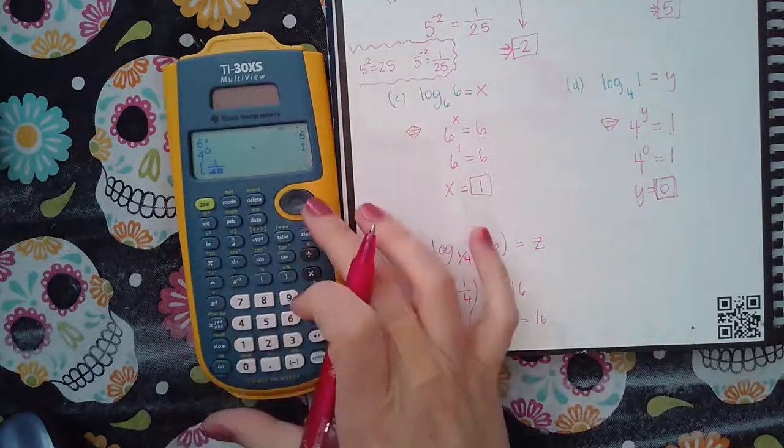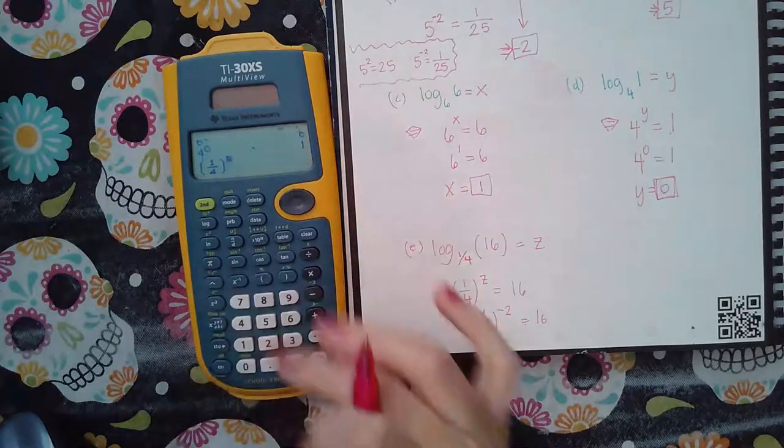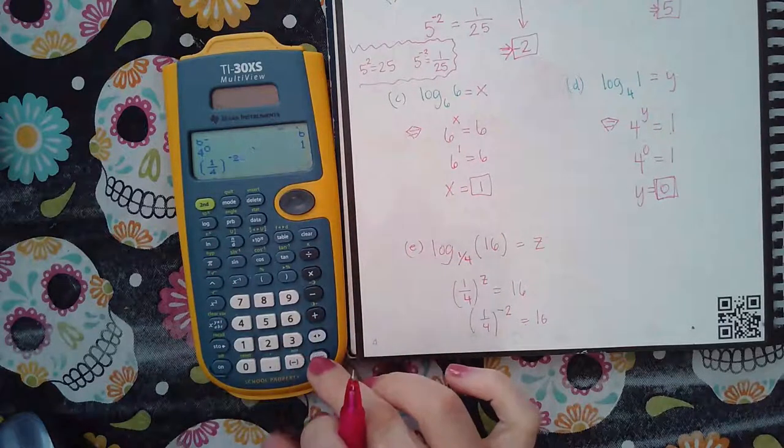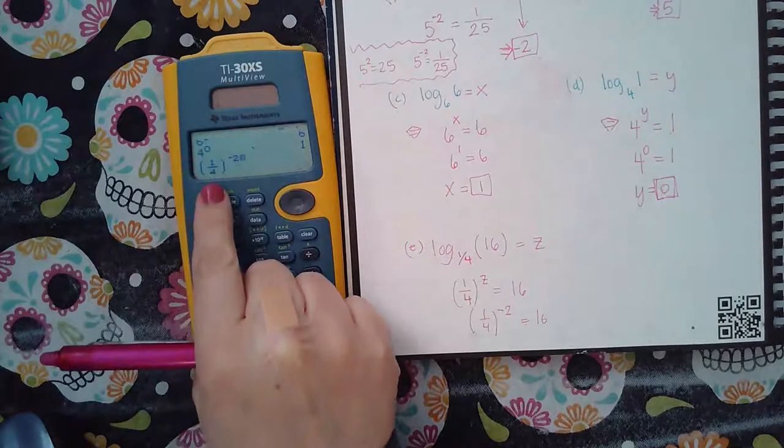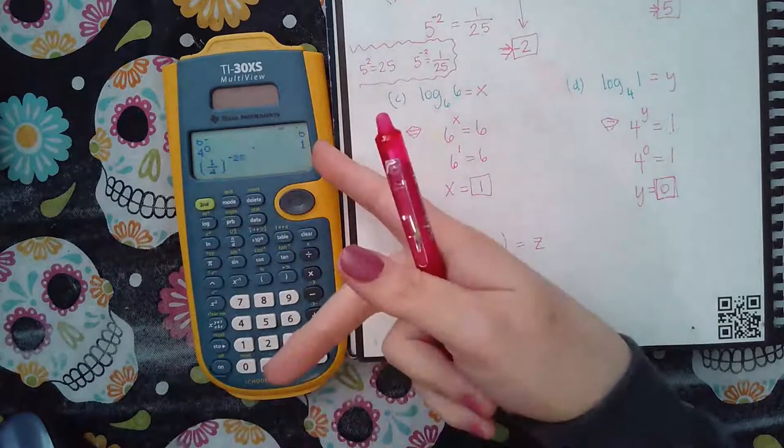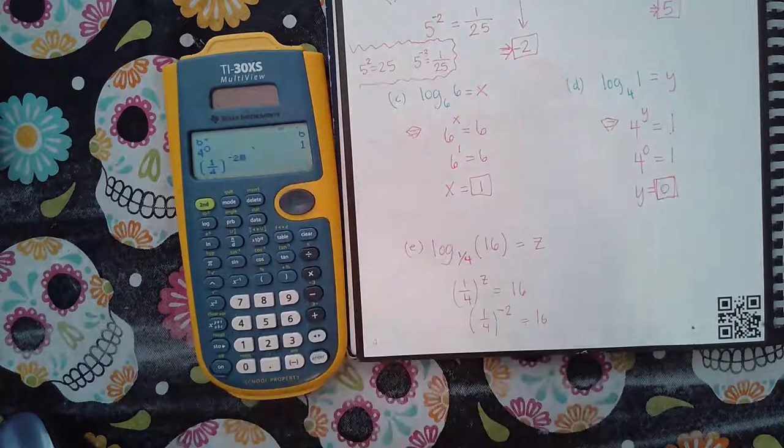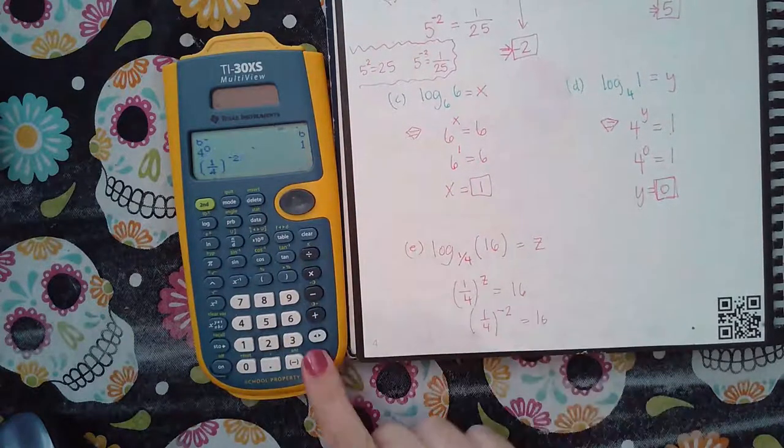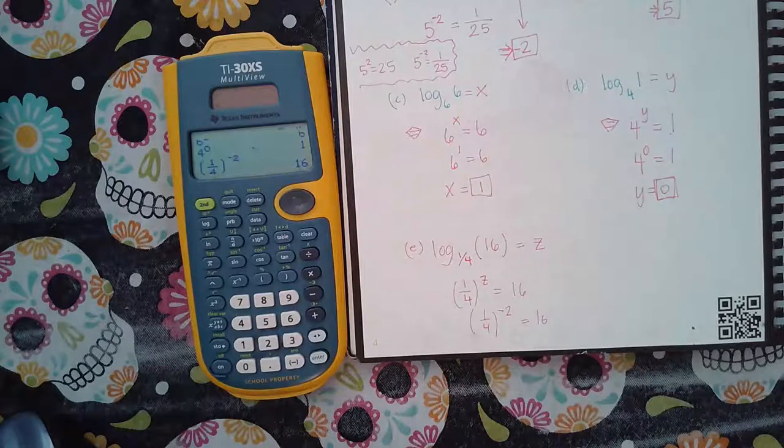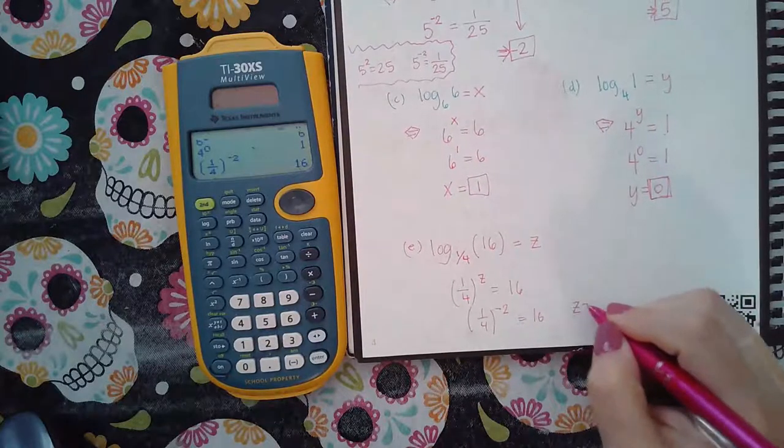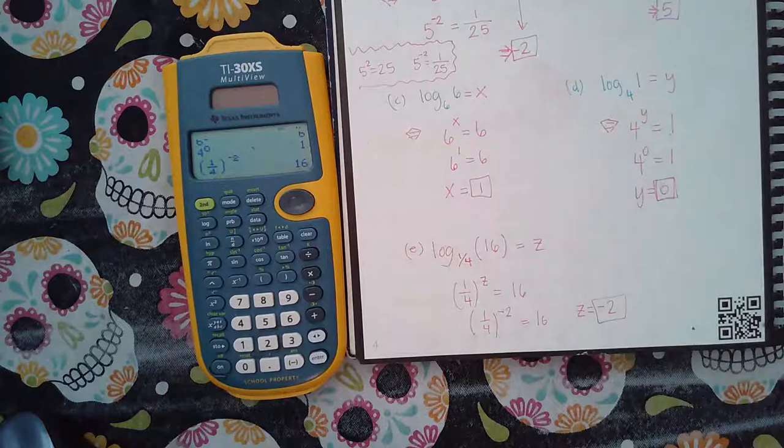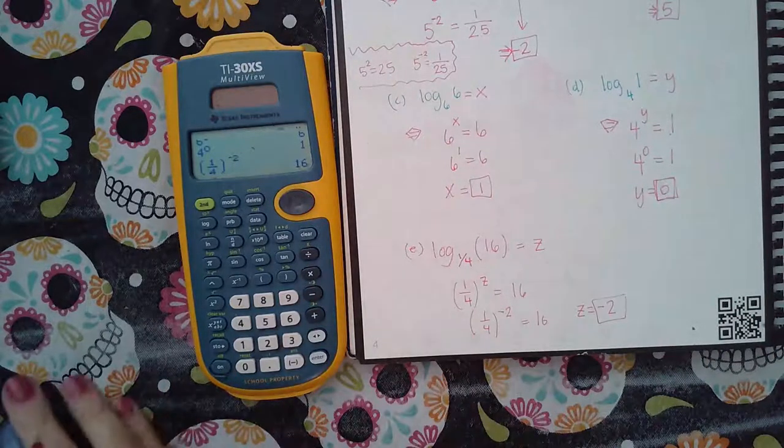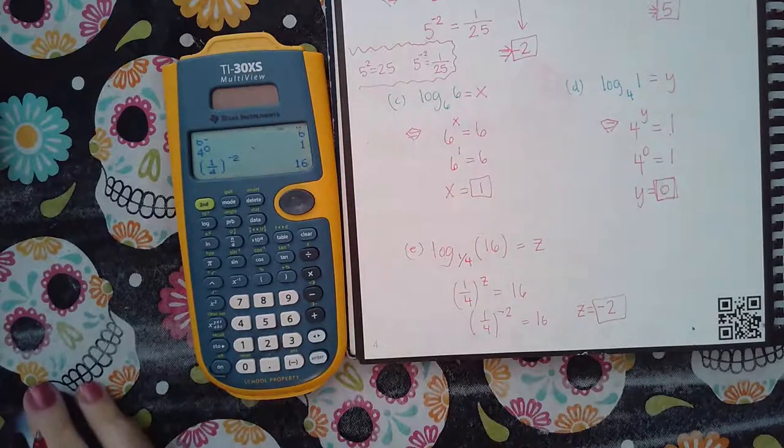1 over 4 raised to the negative 2. So it should be doing two things: it should be squaring it, which would make it 1 over 16, but then because of the negative, it should be flipping it over, making it 16 over 1 or just 16. And sure enough, it's 16. So what was the variable? The variable equals the exponent, which was negative 2.